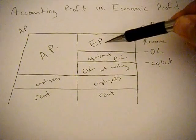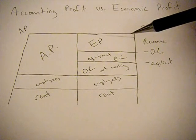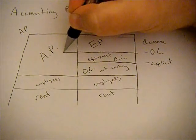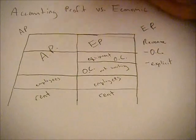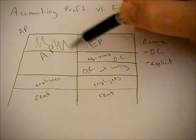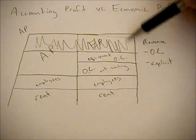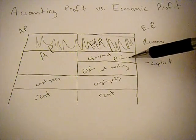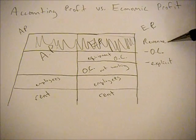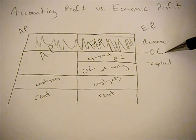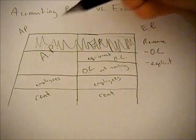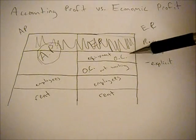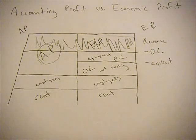Now let's say that people recognize you're making an economic profit and you have to lower your prices due to competition. Over time, if it's perfectly competitive, this economic profit is going to disappear as more firms enter the market. So now your economic profit is zero — your revenue is actually equal to your opportunity costs and your explicit costs. However, you still have a positive accounting profit because you're not taking into account these opportunity costs.